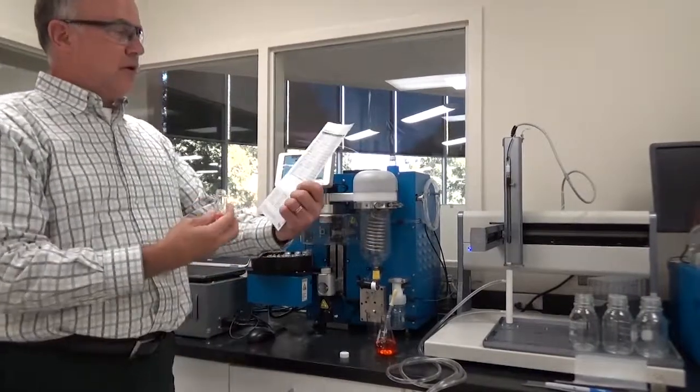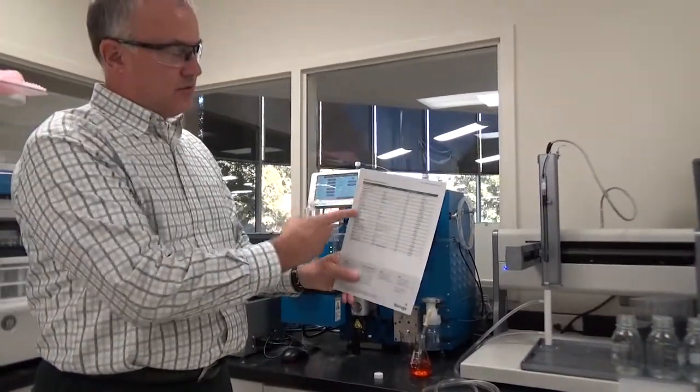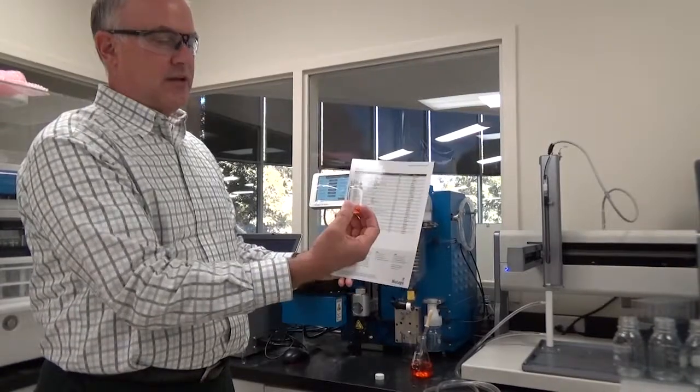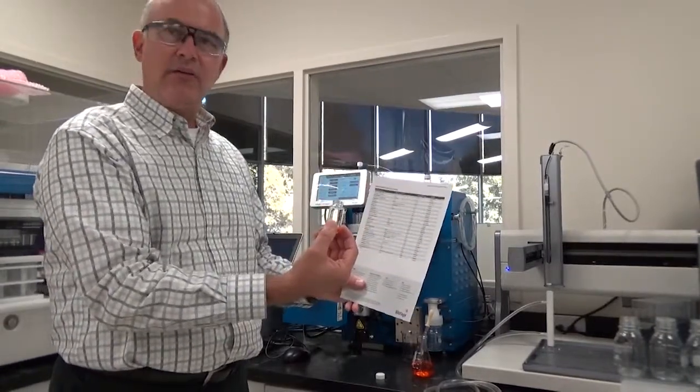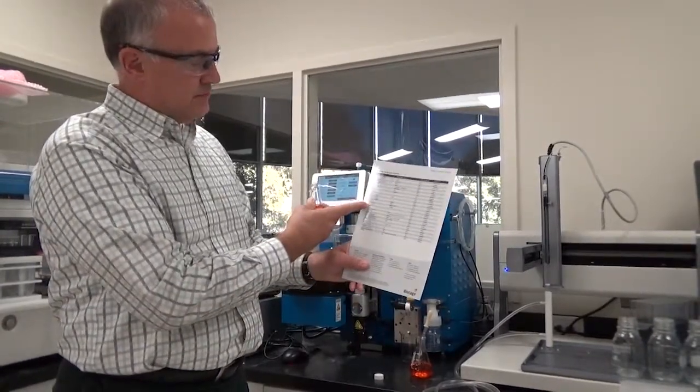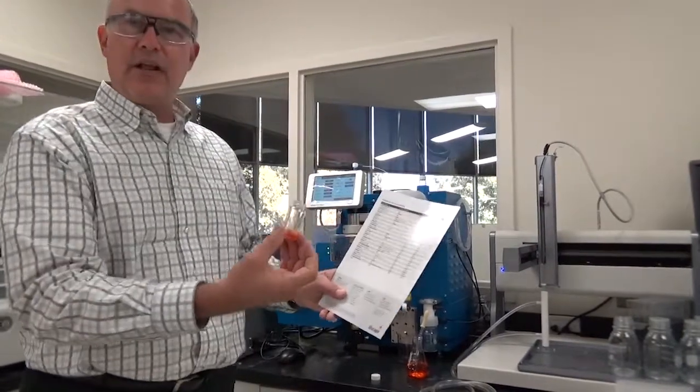And then you look on the back, and the same card tells you which program to use. In this particular case, I have methanol. So I look up methanol, and I use the volatile method.